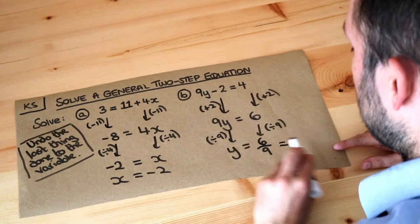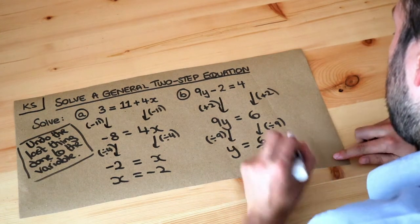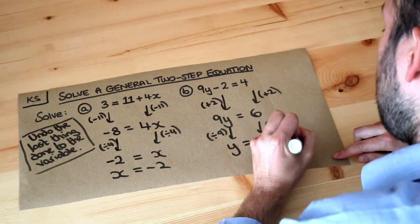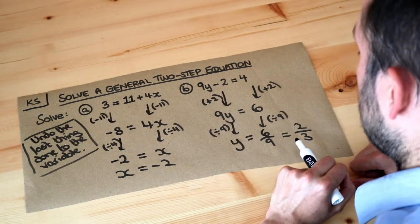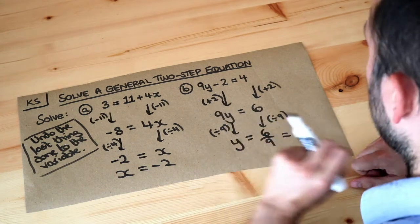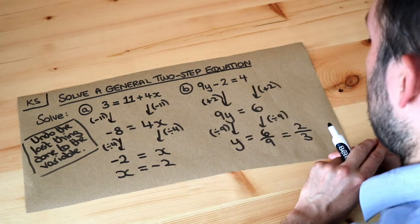And then we should probably simplify that fraction. 6 ninths we could divide top and bottom of that fraction by 3 to get 2 thirds. In algebra it's always best to give your answer in fractional form rather than decimal form, and certainly in algebra never give your answers as either rounded decimals or recurring decimals, that would be bad.